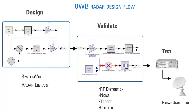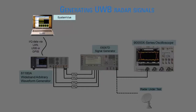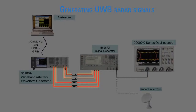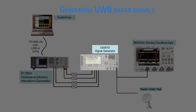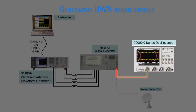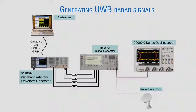SystemVue is at the center of a solution that takes you from design through validation and test. Shown here is a test setup for generating UWB radar signals. Different UWB waveforms are generated in SystemVue and then downloaded to the Agilent 81180A wideband arbitrary waveform generator. The output differential IQ signals are modulated by the Agilent E8267D PSG vector signal generator to create an X, Ku, or Ka band signal. We will look at the signal on the 90000 X-Series oscilloscope using the Agilent 89600A vector signal analyzer software.